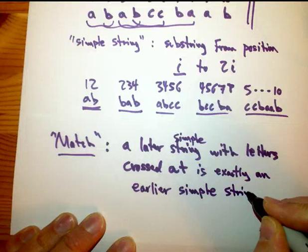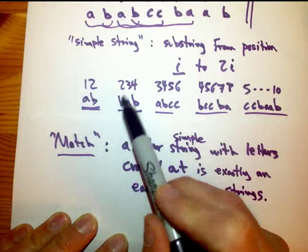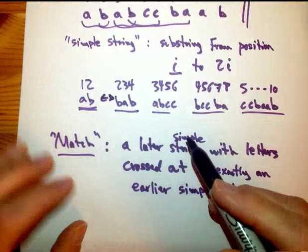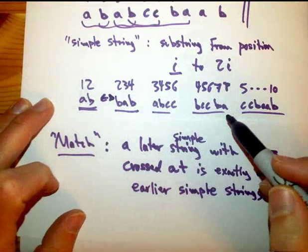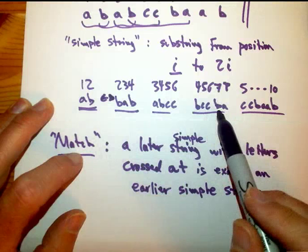For example, there's a lot of matches here. If you take the 2, 3, 4 simple string, if you just cross out the first B, you get the very first one. So that's a match. So these guys match. Similarly, if you cross out the C, C here, that's a match between these guys. This guy doesn't have any match with this guy, because A and B don't show up in that order.